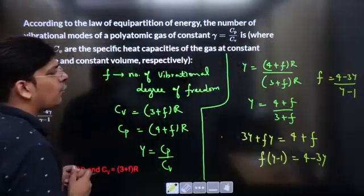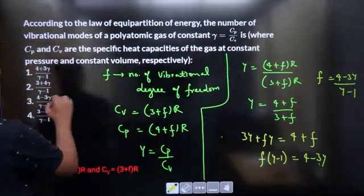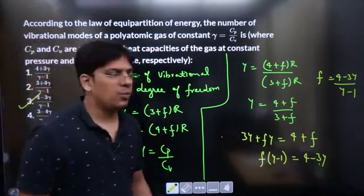Okay. Now degree of freedom is 4 minus 3 gamma divided by gamma minus 1. Option 3 is chosen as the right option.